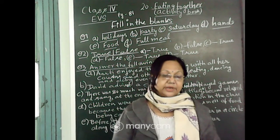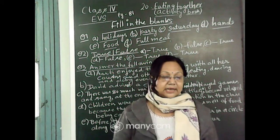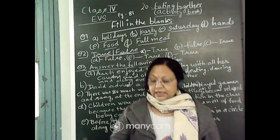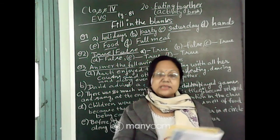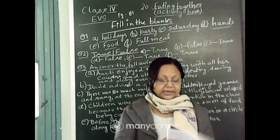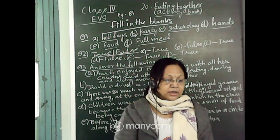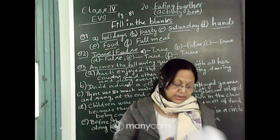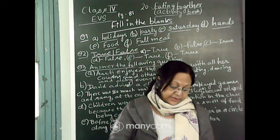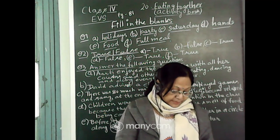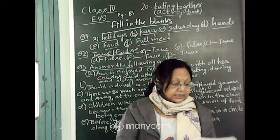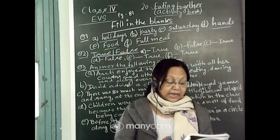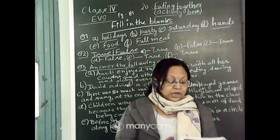Welcome Class 4 to your EBS class. Today we will write the question answers of your activity book chapter 'Eating Together.' Take out the activity book — this is page number 82 — and write down the question answers.